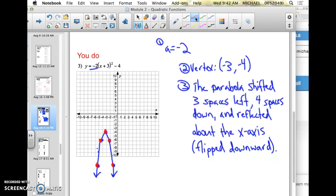And then finally I stated the transformation. So in this case, in a complete sentence I wrote, the parabola shifted 3 spaces left, 4 spaces down, and reflected about the x-axis. In this portion, that's a fancy way of saying that the parabola flipped downward, and it flipped downward because the function is negative. And you can tell that the function is negative based off whatever the a-value is. In this case, the a-value is negative 2. Please raise your hand if you have any questions.